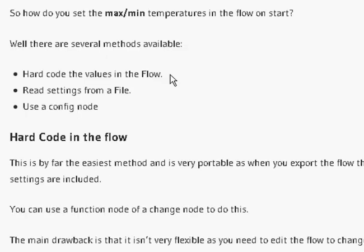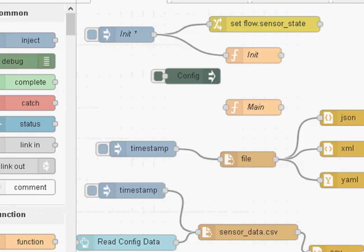There are several methods of doing it and they all have advantages and disadvantages. The quickest and easiest is to hard-code it in the flow. Another popular method, familiar from operating systems, is to read it in from a settings file. And another method in Node-RED is to use the config node, which you need to install in order to use it.